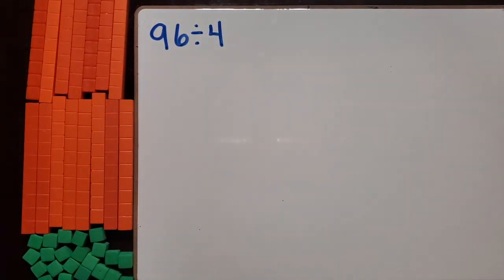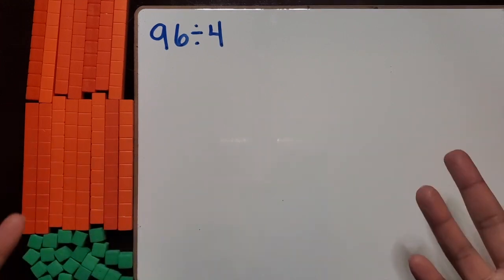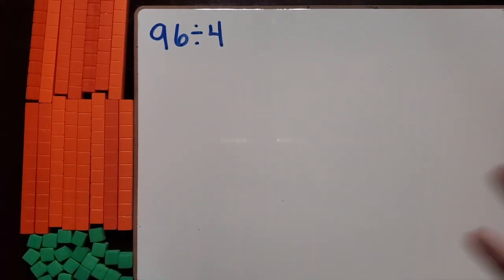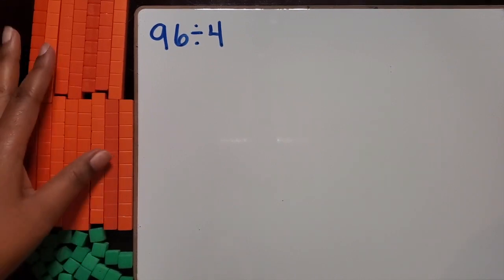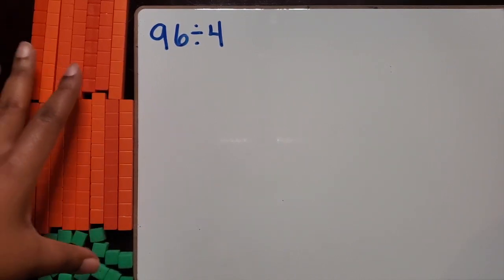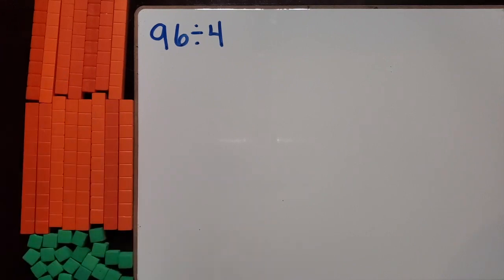We want students to remember when they're dividing, they're sharing out a certain amount or measuring out a certain amount. In this example, they're going to be sharing out 96 of our blocks into 4 equal groups.